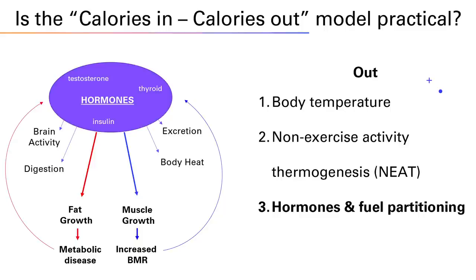Let's play devil's advocate. Say body temperature isn't a factor, NEAT isn't a factor, and you can measure calories in and out perfectly for a day. Even then, can you use calories-in-calories-out? Really no — because your hormones are going to determine how you partition your calories. If you have excess calories, where do they go? Brain activity, digestion, excretion, body heat? Your hormones determine all that. Simply put: do they go to fat growth or muscle growth? If your hormones dictate those excess calories go to fat growth, that leads to increased visceral fat, more inflammation, more metabolic disease — a vicious cycle of disease.